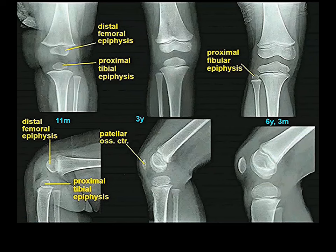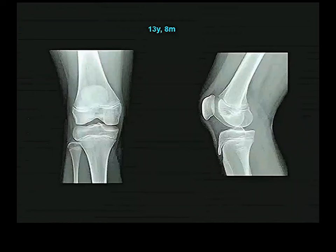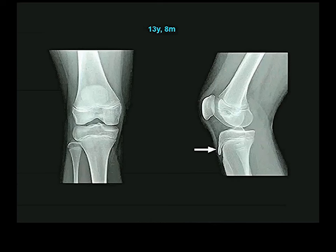The tuberosity of the tibia is actually part of its proximal epiphysis, not part of the shaft. The tuberosity into which the patellar tendon inserts is part of the proximal epiphysis.